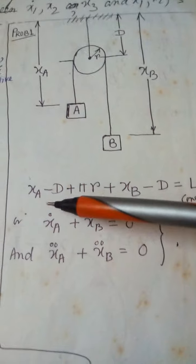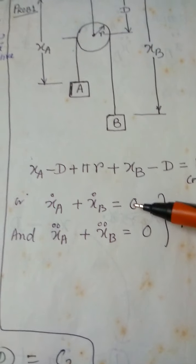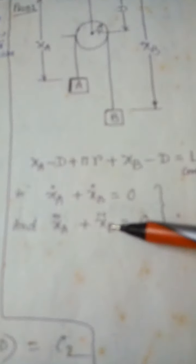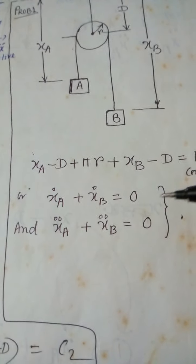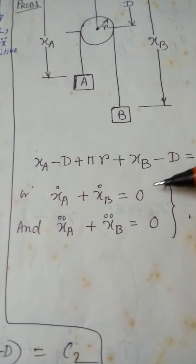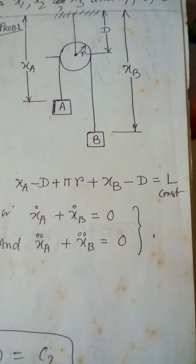Taking a time derivative of the length equation, we get xa_dot plus xb_dot equals zero. This means the velocity of mass A plus the velocity of mass B equals zero. Differentiating again with respect to time, acceleration of A plus acceleration of B equals zero. Physically, if A moves upward, B moves downward, so xa_dot equals minus xb_dot. This is the fundamental starting point.